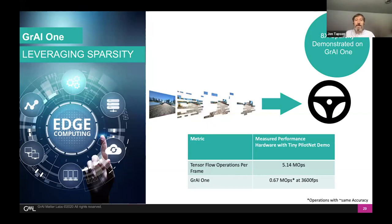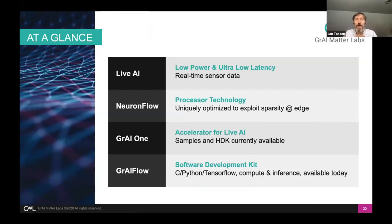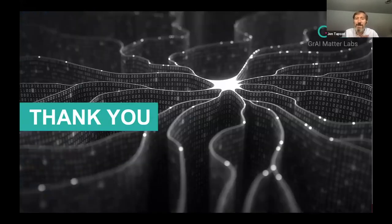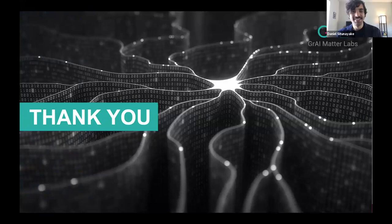To summarize, what we're trying to do is what we call 'Live AI' — operating on real-time data streams which require very short latencies and which probably have very high dimensional reduction possibilities. We have a process technology instantiated on silicon that exploits sparsity, and in its current form it is an accelerator. We have a software development kit that can program that chip and get inferences working on the silicon fabric. That's where we are today.